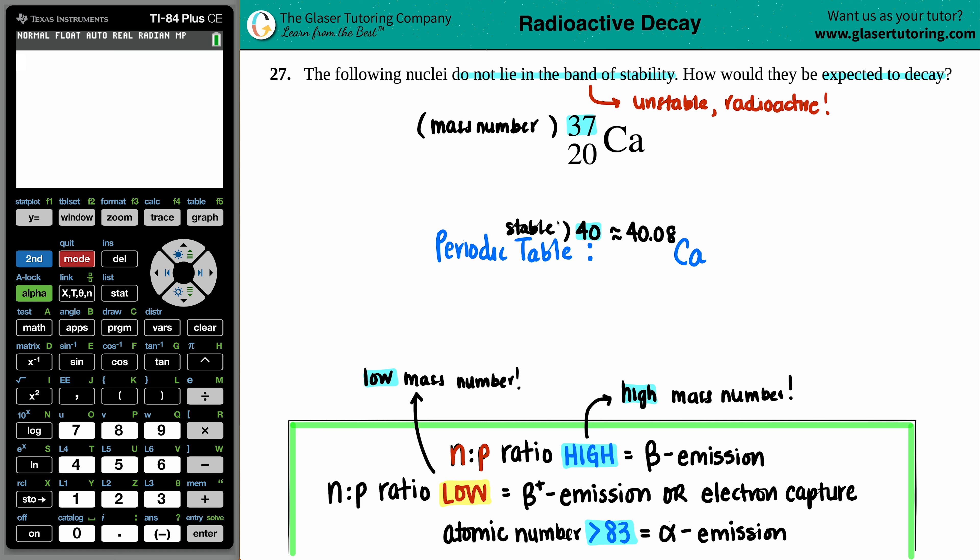Which means that the stable form of calcium, because if it's the most abundant, right, that means that it's going to be the most stable. That's the one that's in our body, the stable form would be calcium-40. But they gave us a 37. That means that this is now a low mass number. So there's the context.